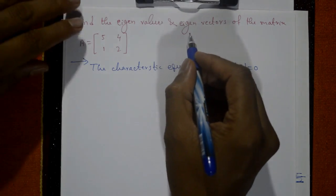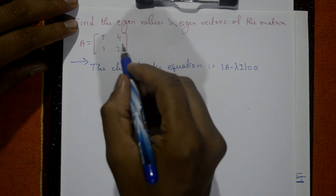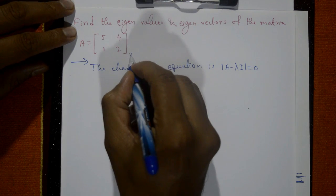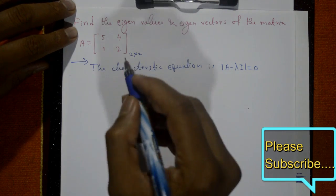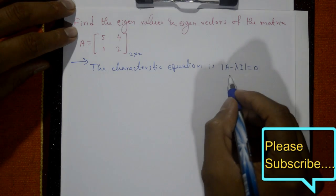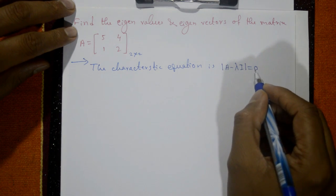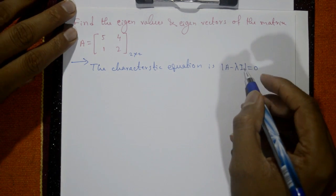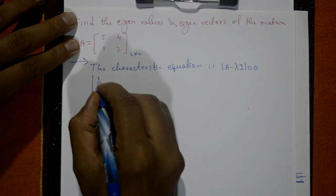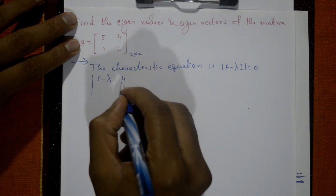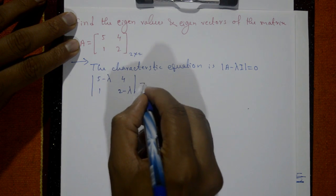Find the eigenvalues and eigenvectors of the matrix — a 2×2 square matrix [[5, 4], [1, 2]]. The characteristic equation is |A − λI| = 0, so we write the determinant of [[5−λ, 4], [1, 2−λ]] equal to 0.